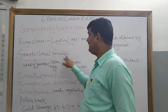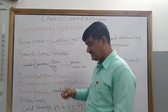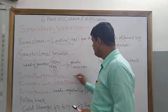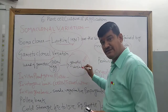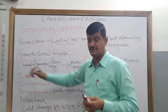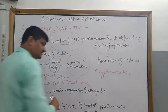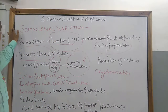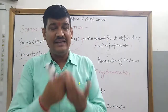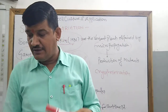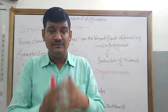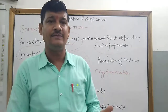In gametoclonal variation, we are using either pollen grains or egg cells to produce genetic variation. These genetic variations present in the plant are highly different from the plants from where they have been taken. Next, germplasm conservation. Germplasm refers to the total number of genes present in the crop or its related species. The sum of all genes present in a crop plant or its related species is known as germplasm.